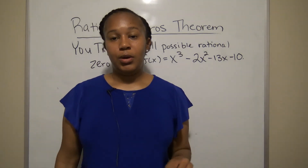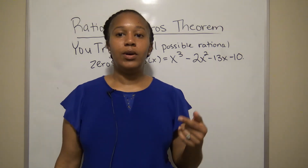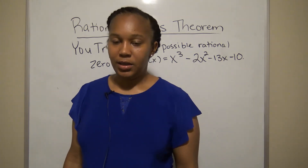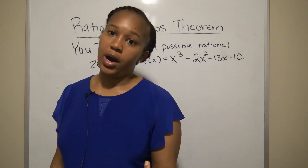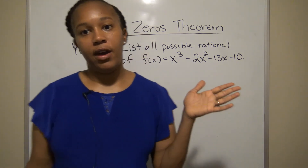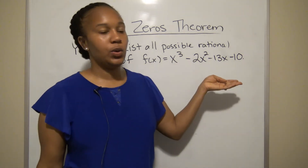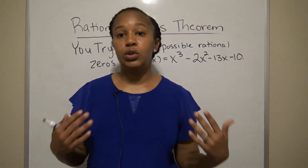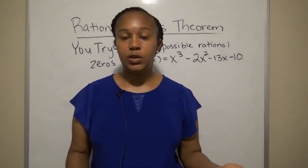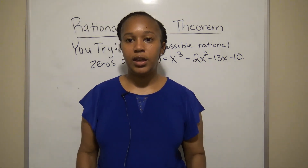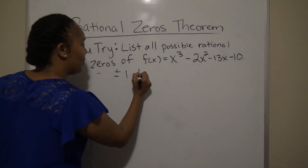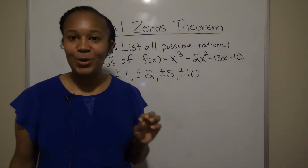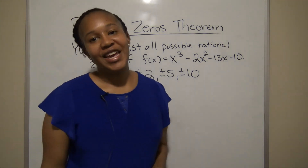I know we only worked one example, but it did have two parts and there's a lot to it. Before I let you go, try this on your own: f(x) = x³ - 2x² - 13x - 10. Use the Rational Zeros Theorem to find all possible rational zeros. The answer is ±1, ±2, ±5, and ±10.